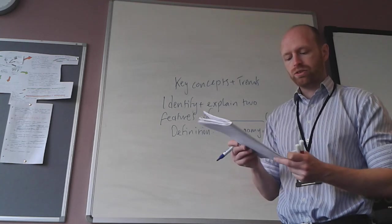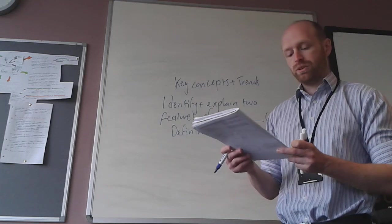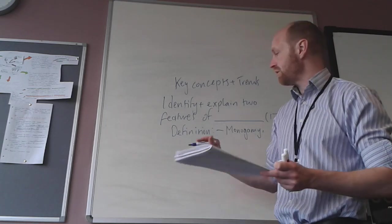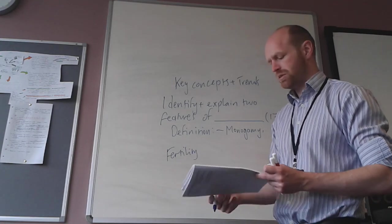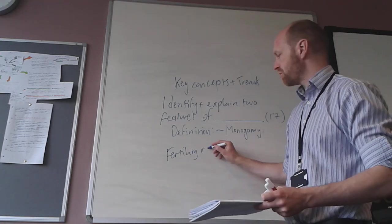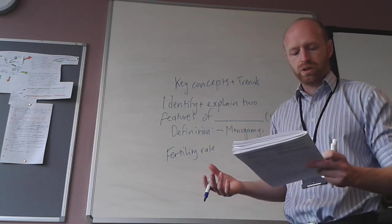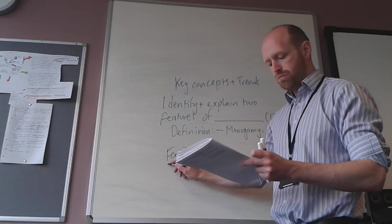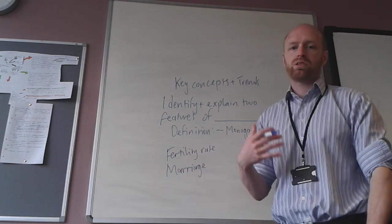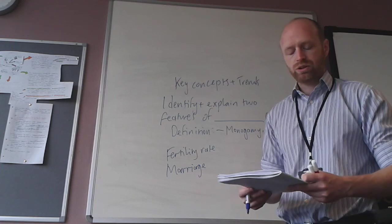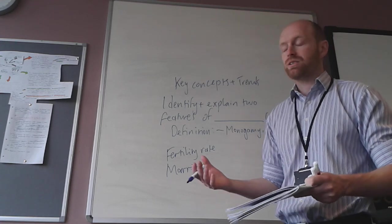The other concepts in this section are the trends in families and households. Family size relates to fertility. The fertility rate is the number of children being born, and so you can talk about the reasons why there are fewer children being born. Marriage has declined but remarriage has risen, so first-time marriage has declined but remarriage has increased.